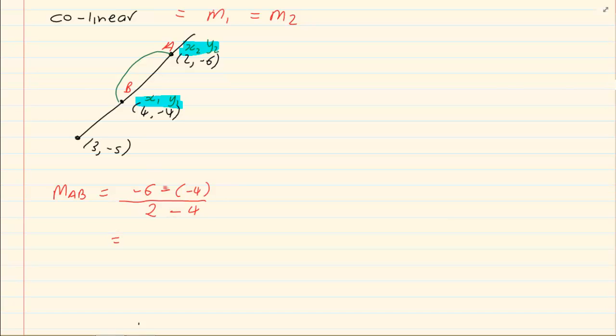Now, minus 6 minus minus 4 is plus 4. Minus 6 plus 4 is minus 2 over minus 2 which is equal to 1. Now, to get the second gradient, you have a choice. You can work with BC or you could even work with AC. It doesn't matter which points you choose as long as you have two gradients on that line. Let us choose BC.